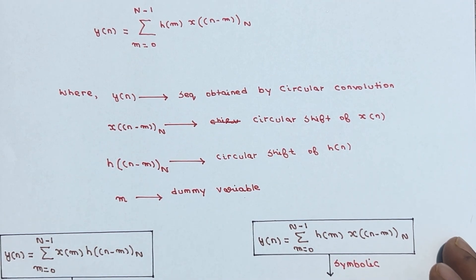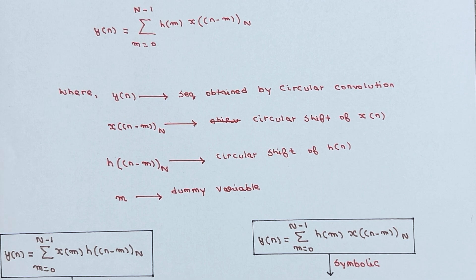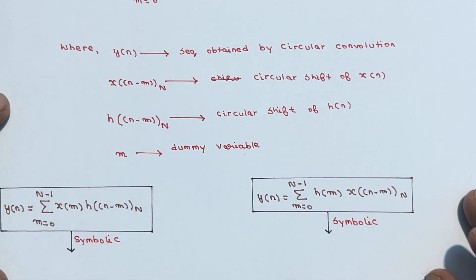We have seen the circular convolution of two periodic discrete-time sequences x(n) and h(n) with periodicity of N samples and how it is mathematically defined. The output sequence y(n) obtained by circular convolution is also a periodic signal with a period of N samples — hence this convolution is also called periodic convolution.